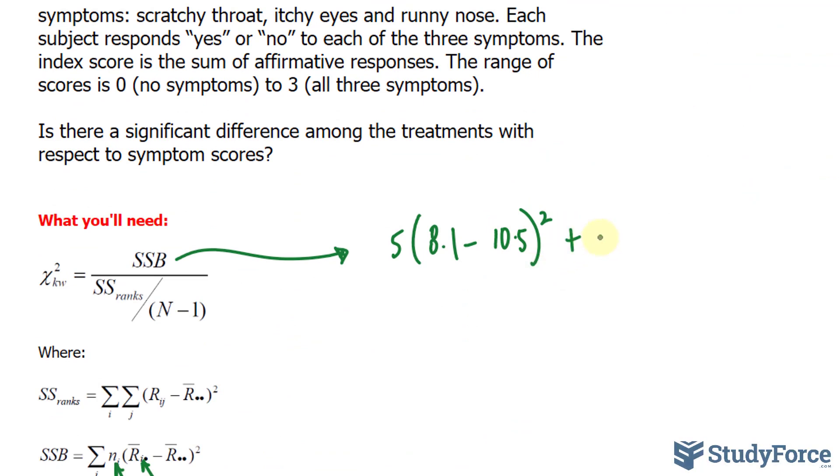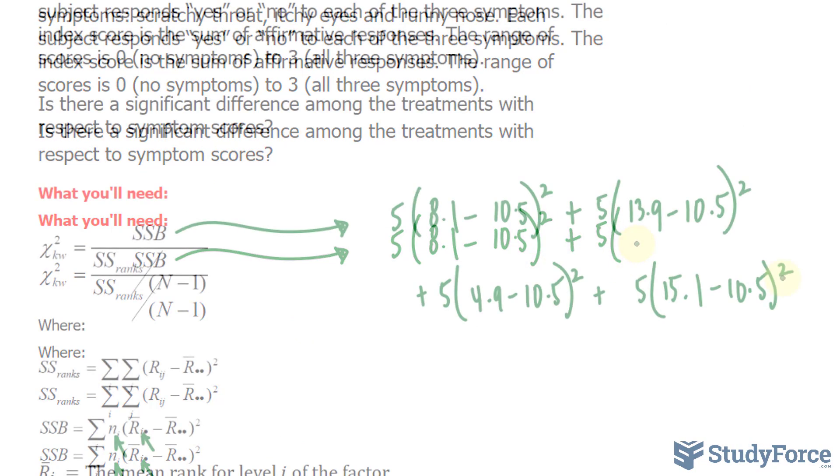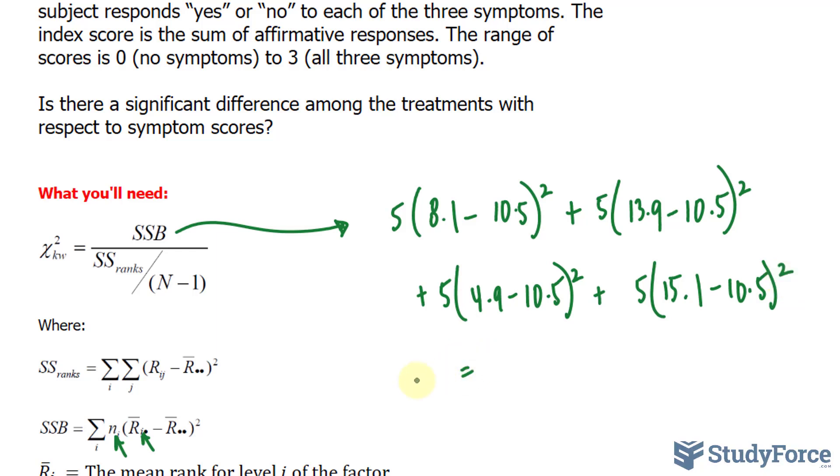And I keep doing this for each group. If you multiply and add these correctly, you should end up with an SSB value that is equal to 349.2. Okay, so we have the numerator.